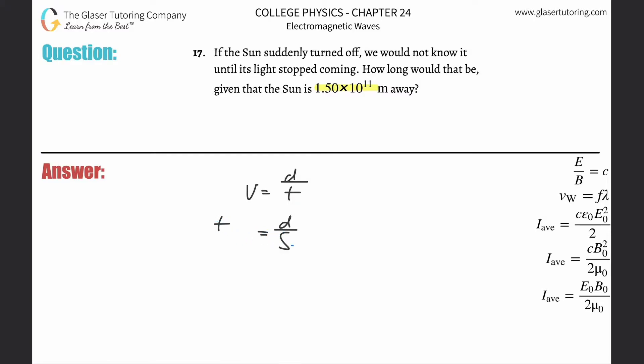In order to solve this, we need to know the distance, so that's 1.5×10^11. And what's the speed of light? Well, the speed of light travels in a vacuum, so that's going to be 3×10^8. It travels in the vacuum of space.